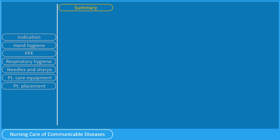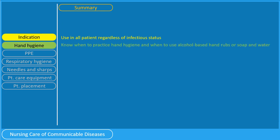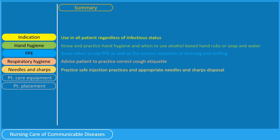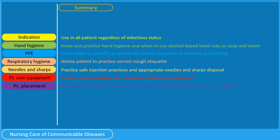To summarize: the standard precaution is used for all patients regardless of infectious status. As a nurse, you must know when to practice hand hygiene and when to use alcohol-based hand rubs or soap and water. Know when to use PPE as well as the correct sequence of donning and doffing. Advise patients to practice correct cough etiquette. Practice safe injection practices and appropriate needle and sharps disposal. Practice proper handling and disposal of client care equipment, and place patients in a single room and cohort appropriately if a single room is not available.